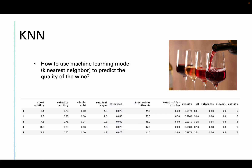Let's first take a look at the dataset. We have several columns like fixed acidity, volatile acidity — these are the chemicals that describe the quality of the wine. The last column, quality, represents the label we're going to predict. The higher the value, the better the quality of the wine.